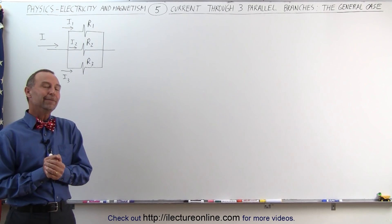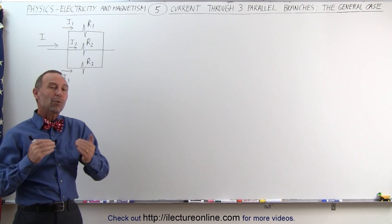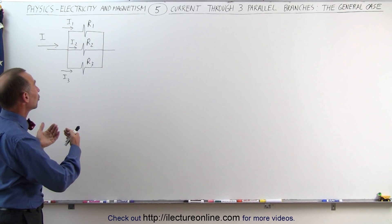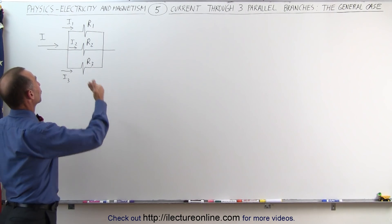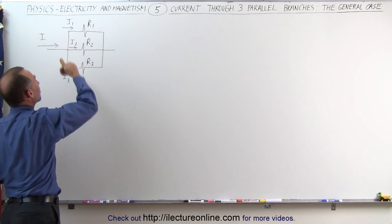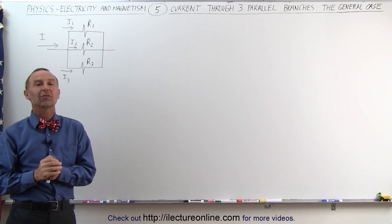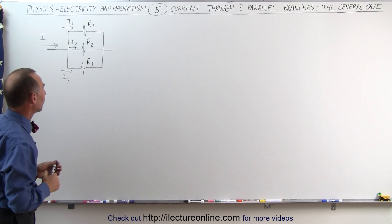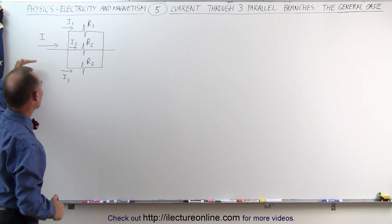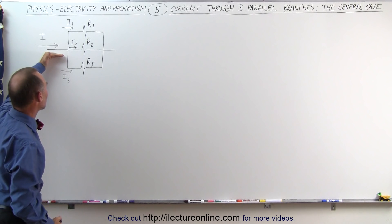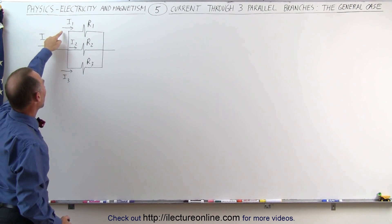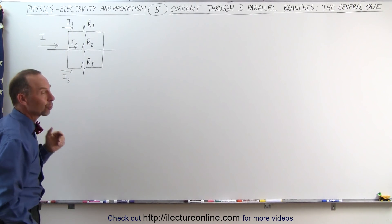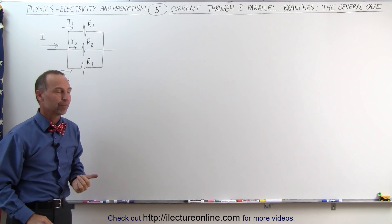Welcome to Alec Turnline! We're ready to find the general equations for how to calculate the current through each of the three branches when we have three branches in parallel, each branch having a separate resistance. We have a general current I entering the branch point, and we're going to determine equations for the current through each of the three branches.